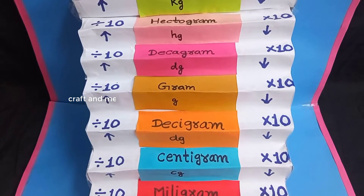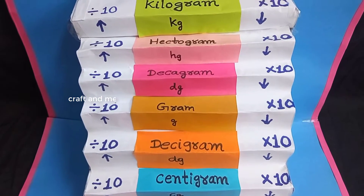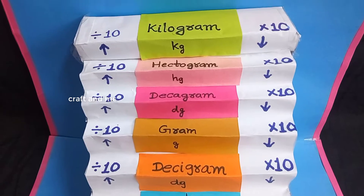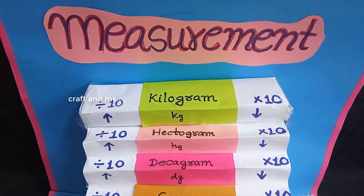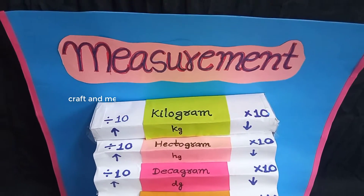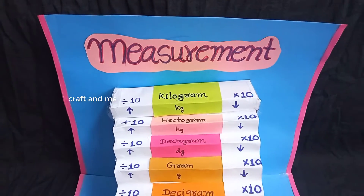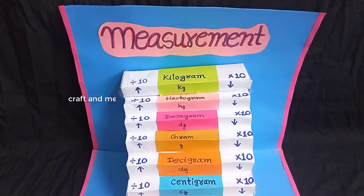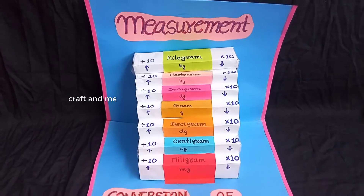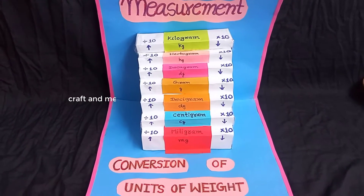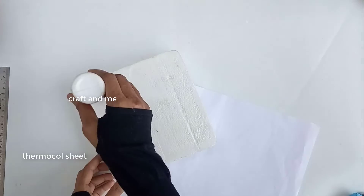When we need to convert from a larger unit to a smaller unit, then we multiply. And when we need to convert from a smaller unit to a larger unit, then we divide.